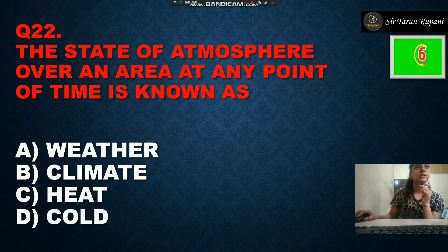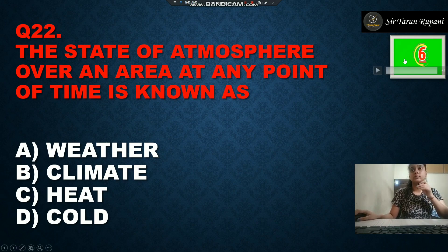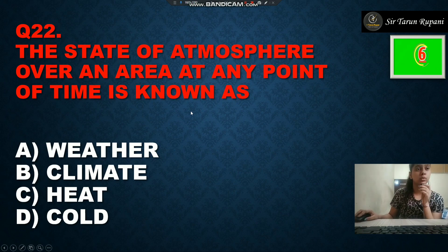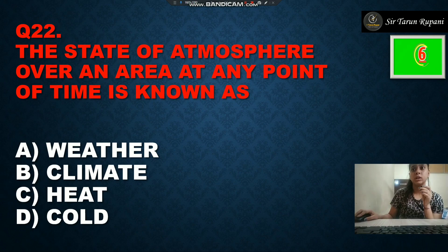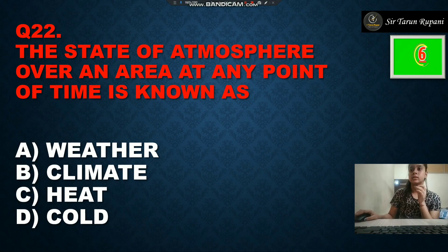Our next question: the state of the atmosphere over an area at any point of time is known as — option A is weather, option B is climate, option C is year, and option D is cold. The correct answer is option A, weather.